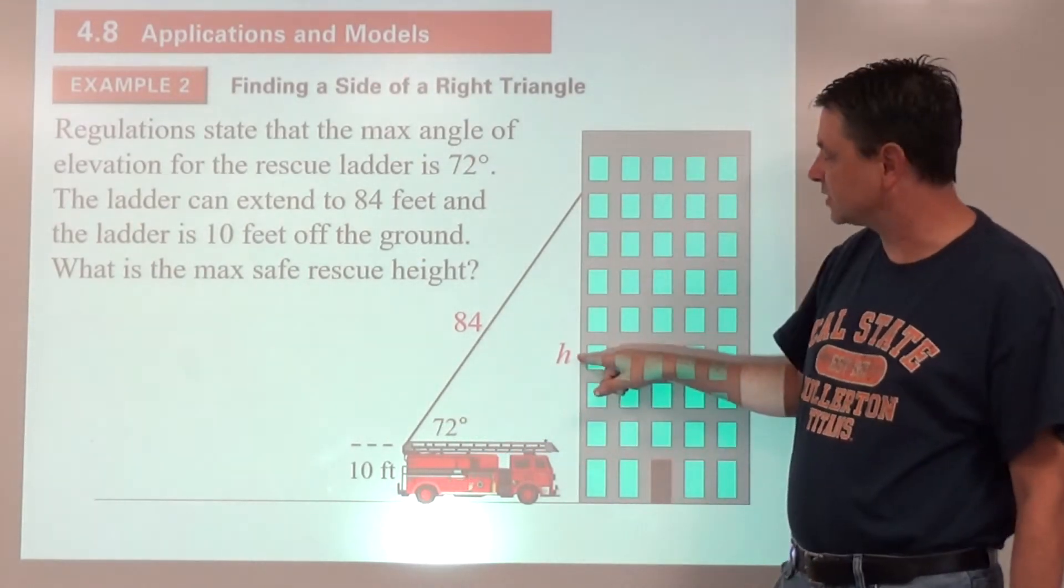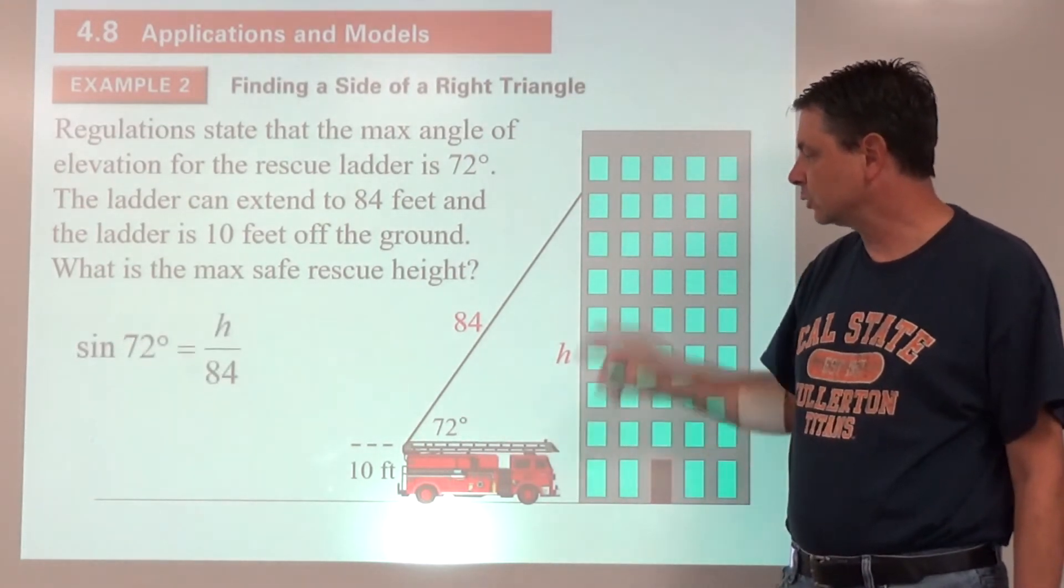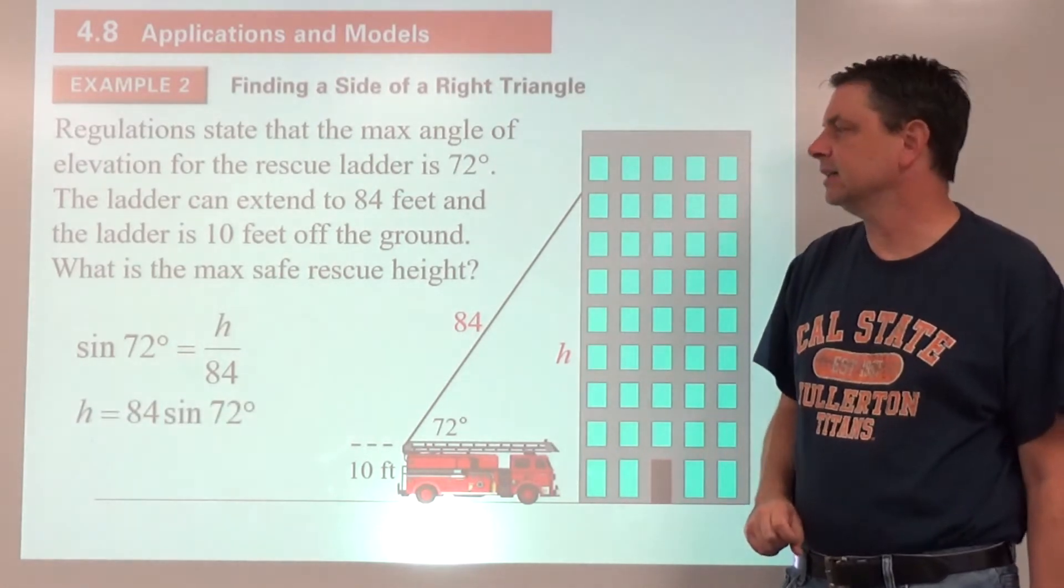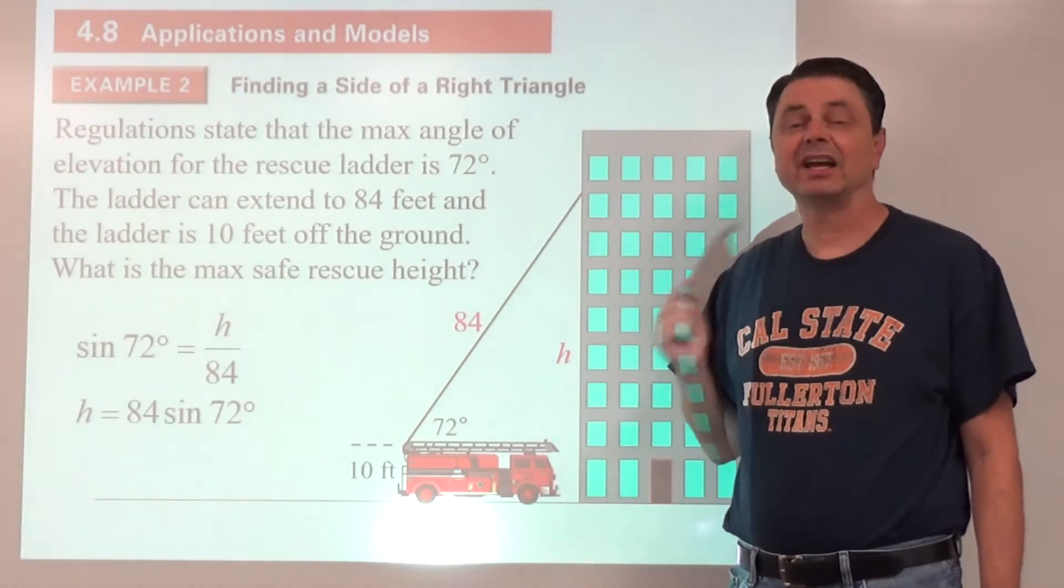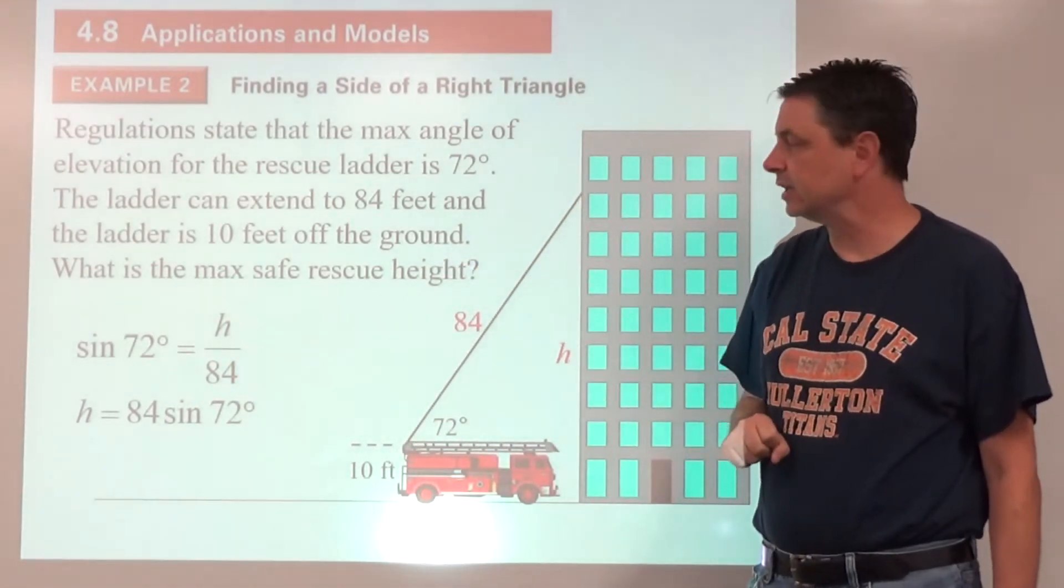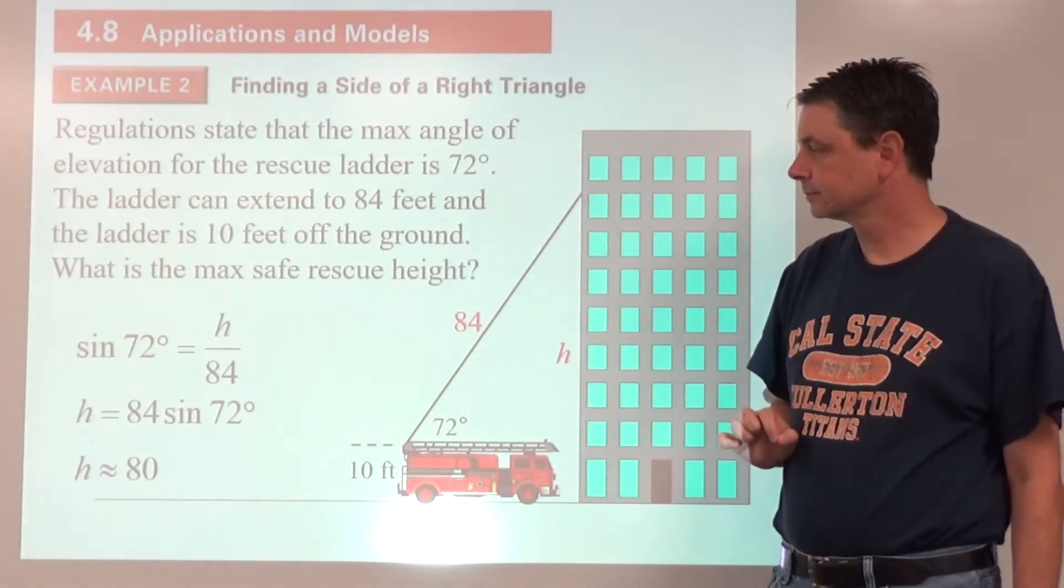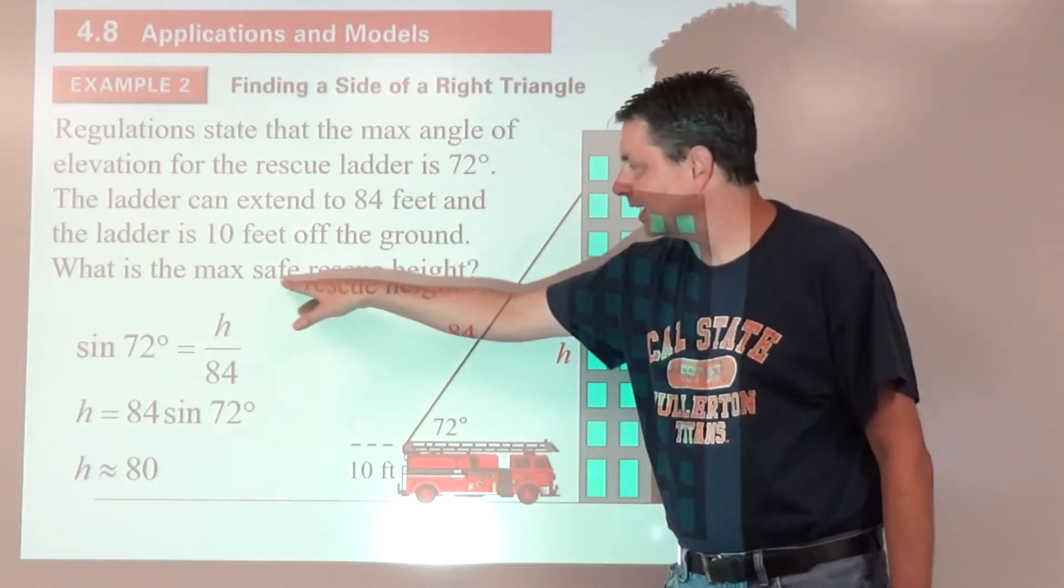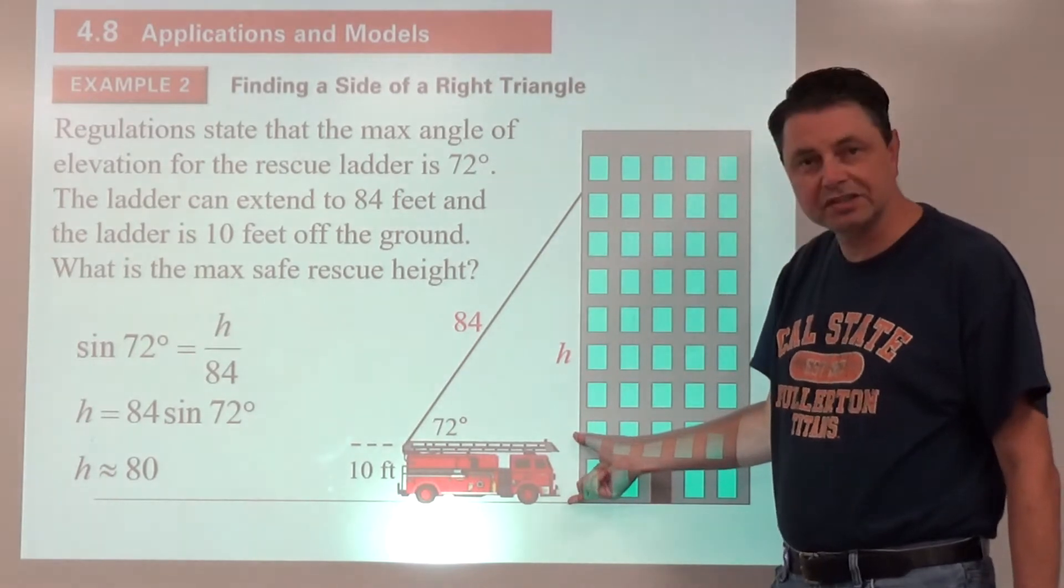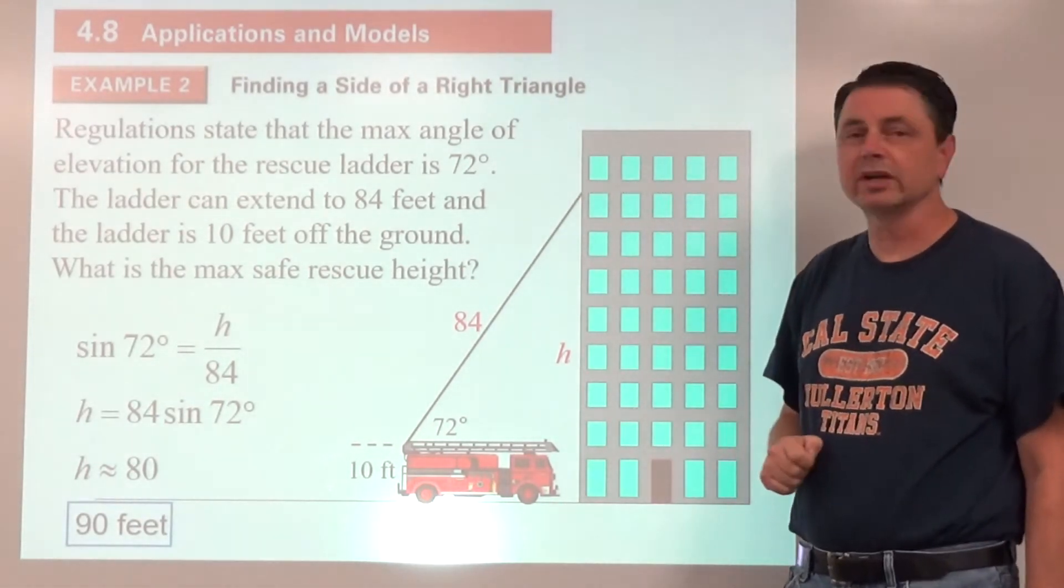Now it's time to set up the trig equation. We've got our 72 degree angle, we've got opposite, we've got hypotenuse, and that's going to suggest we're going to use sine. The sine of 72 degrees equals the opposite divided by the hypotenuse. Multiply both sides by 84, we get the height equals 84 times the sine of 72 degrees. That's about 80 feet, approximately. But I don't think that's the answer to our question because we're talking about how far up the building, and that's just 80 feet from here to here. Add another 10 to that, so the answer is about 90 feet of a max safe rescue height.